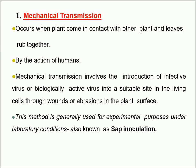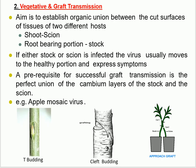First is mechanical transmission. This transmission occurs when plants come in contact with other plants and leaves rub together. By the action of humans, mechanical transmission involves the introduction of infective or biologically active virus into a suitable site in the living cells through wounds or abrasions in the plant surface. This method is generally used for experimental purposes under laboratory conditions. This method is also known as abrasive transmission.